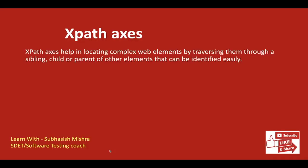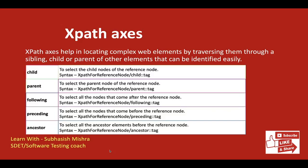XPath axes help in locating complex elements by traversing through siblings, children, or parents of other identifiable elements. Commonly used XPath axes include: child, parent, following, preceding, and ancestor. Child selects child nodes of the reference node; parent selects the parent; following selects all nodes after the reference node; preceding selects all nodes before it; ancestor selects all ancestor elements. A separate video will explain each XPath axis in detail.